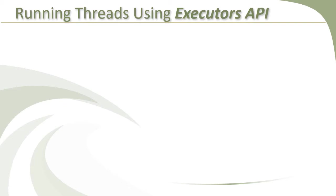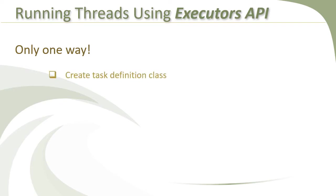As discussed in the previous lessons in this section, there are multiple ways to create and start threads using the Threads API. However, when it comes to the Executors Framework, our job is made much easier. There is technically only one way to execute a task in a separate thread of execution. We need to create a task by implementing the Runnable interface or extending the Thread class, and then provide it to an Executor service. The Executor service automatically creates a thread and runs our task in that thread for us, without us having to create a Thread object and start the thread explicitly.